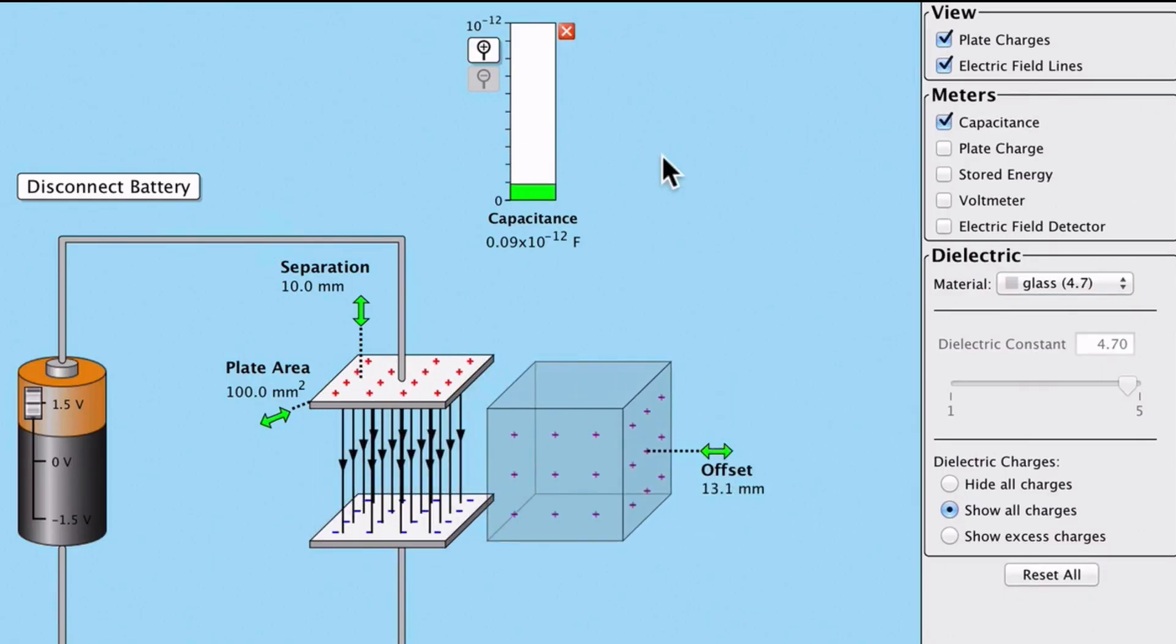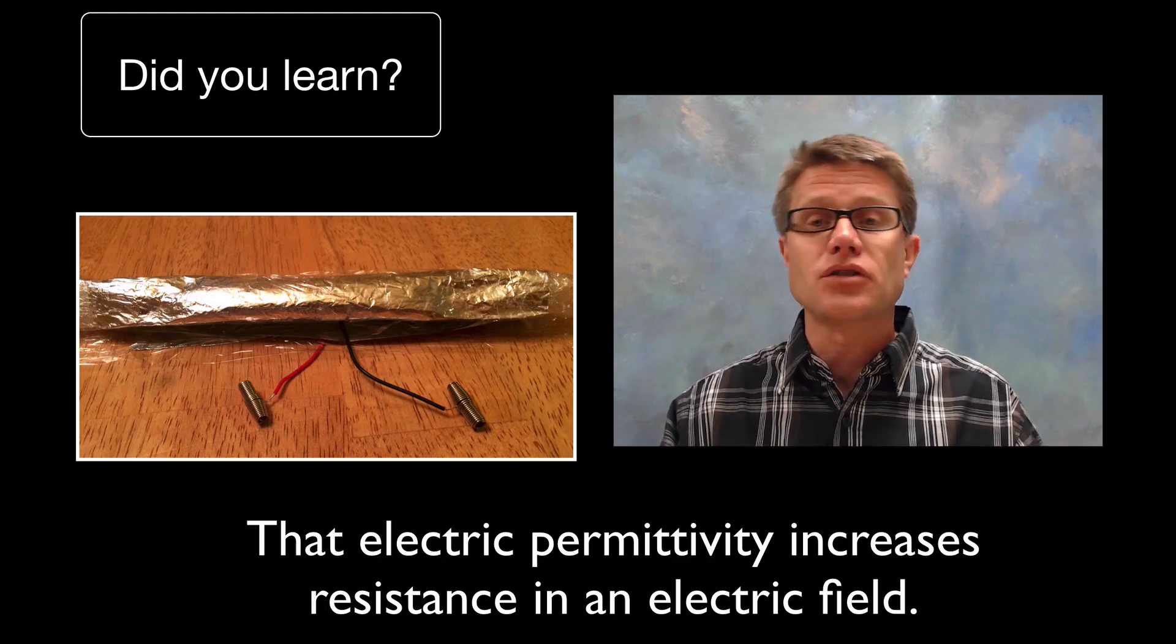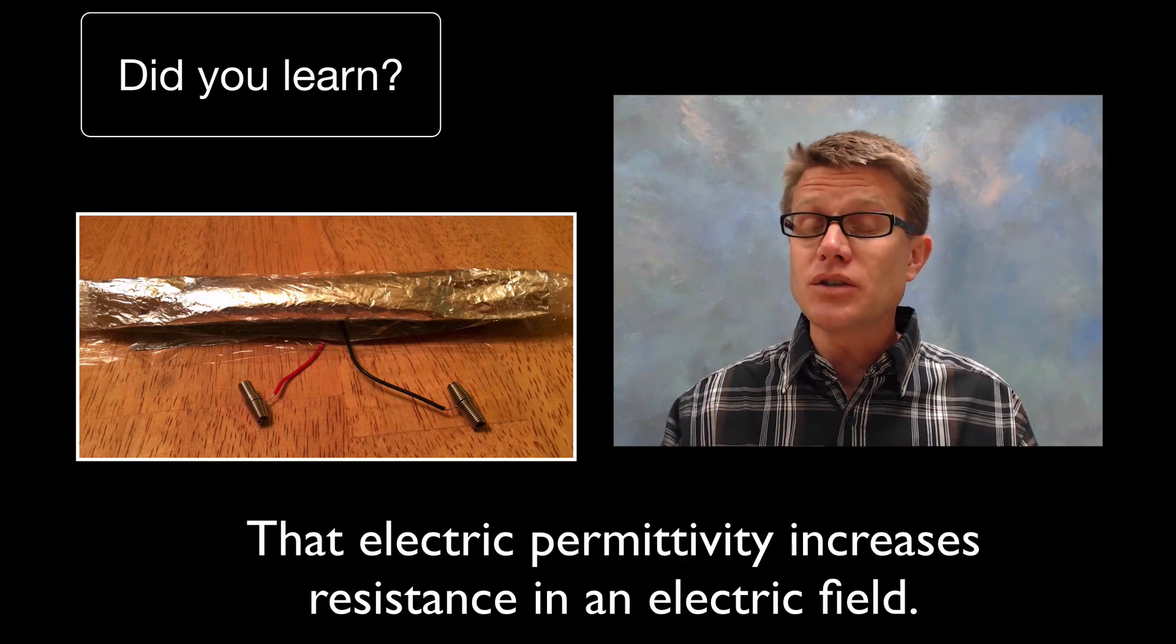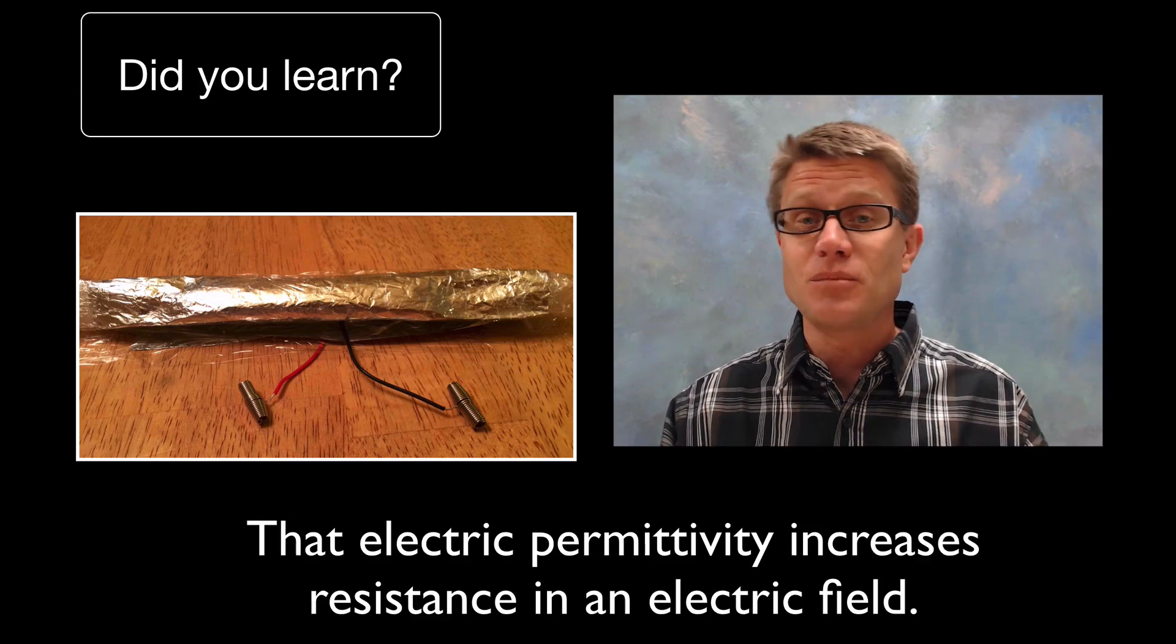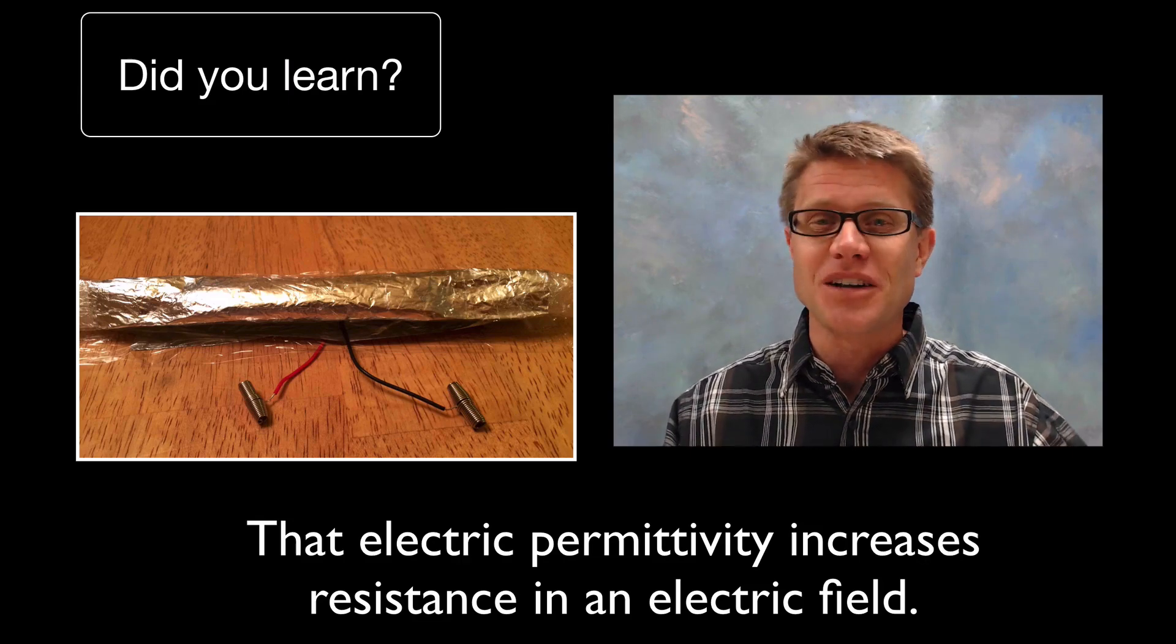If I pull that dielectric out then our capacitance drops down to 0. Did you learn that electric permittivity increases resistance in the electric field? We can use it to make a capacitor which could be made simply out of Reynolds wrap and plastic wrap? I hope so. I hope that was helpful.